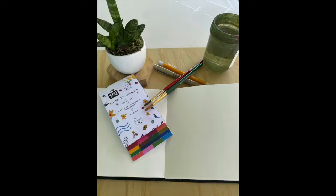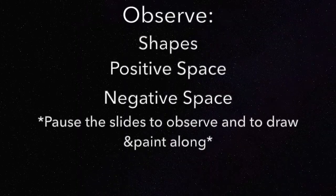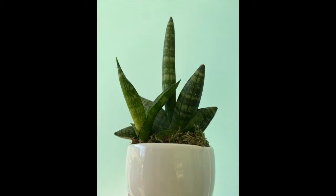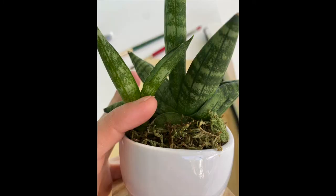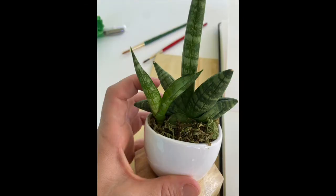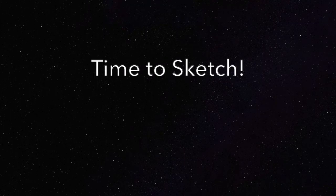All you need is paper and pencil, paint and a plant — nothing too outrageous. You're going to observe the shapes on the plant. Pause here and look at this plant's shapes. You see a lot of triangles, you see how they weave together — the leaves almost braid. Look at the angles.